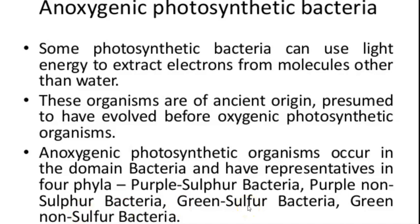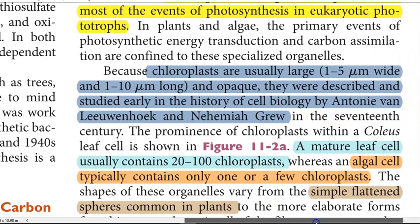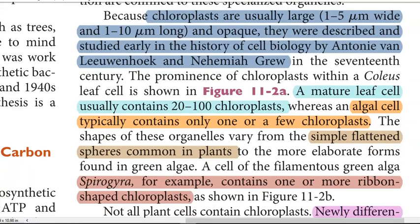These are the organisms in which anoxygenic photosynthesis process will be dominating. Now we look at the structure of the chloroplast. Chloroplasts are usually large - they are 1 to 5 micrometres wide and 1 to 10 micrometres long and they are generally opaque. They were first described in the history of cell biology by Antonie van Leeuwenhoek as well as the Nämia group. Chloroplasts can be found in a mature leaf which usually contains 20 to 100 chloroplasts, whereas an algal cell typically contains only one or a few chloroplasts.